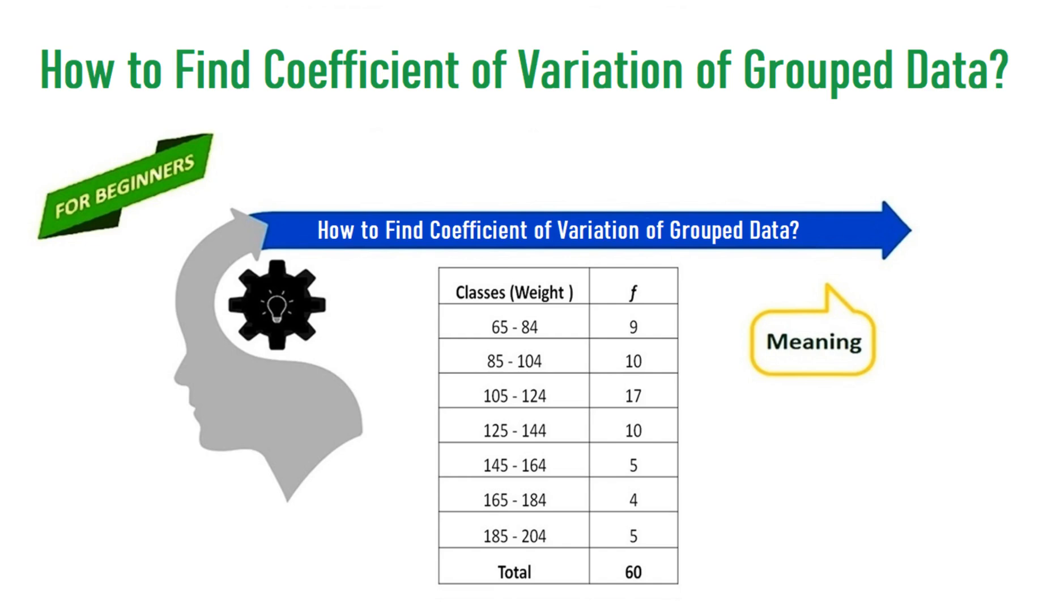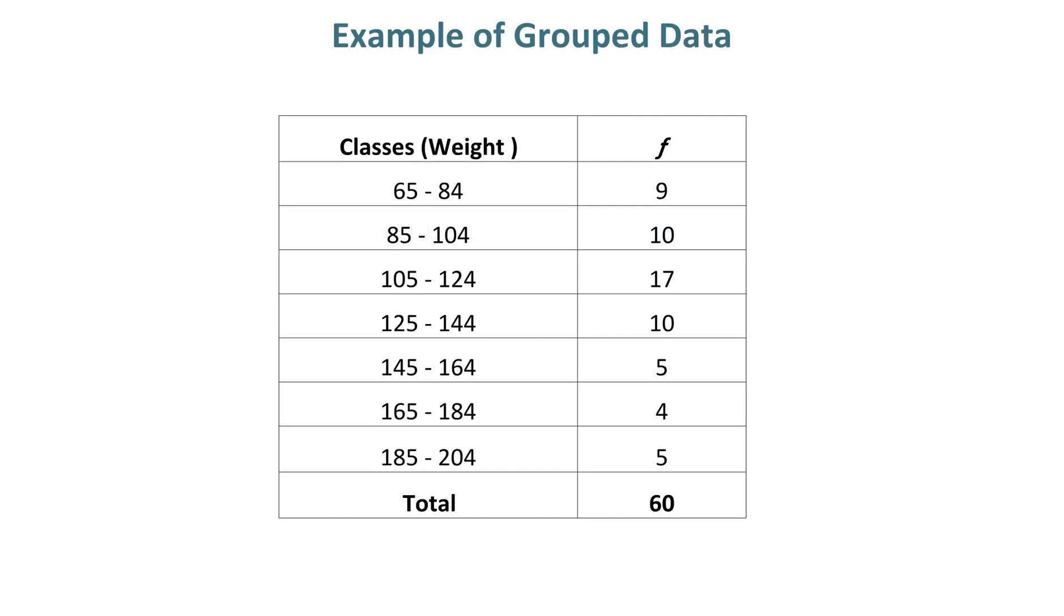How to find coefficient of variation of grouped data. This example of grouped data has 7 classes and a sample size of 60. The frequency is given in front of each class.